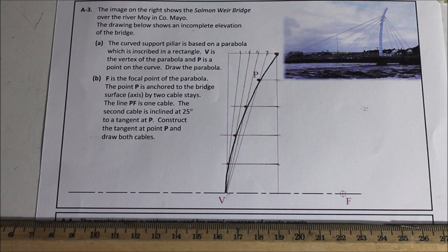B, F is the focal point of the parabola. The point P is anchored to the bridge surface with two cable stays. The line PF is one cable so let's draw that in strong.